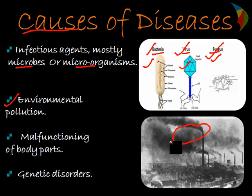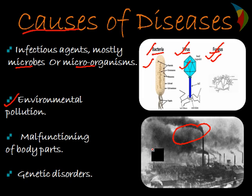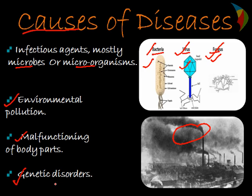Another cause is environmental pollution — harmful gases released from industry chimneys, when inhaled by human beings, cause breathing problems like asthma and bronchitis. Malfunctioning of body parts also causes non-communicable diseases due to abnormal functioning of internal organs. Genetic disorders occur when genes responsible for different functions in the body mutate or function abnormally, leading to disease.